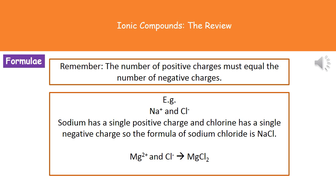If we take magnesium, it has two positive charges (Mg²⁺). Joining it with chlorine, which has one negative charge (Cl⁻), we would need two chlorines to cancel out the two positive charges, giving the formula MgCl₂. Remember: always make sure the number of positive charges equals the number of negative charges.